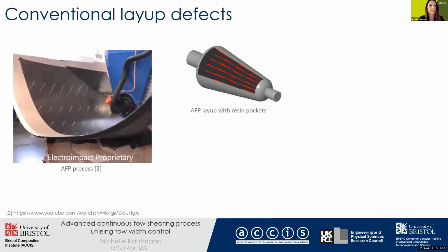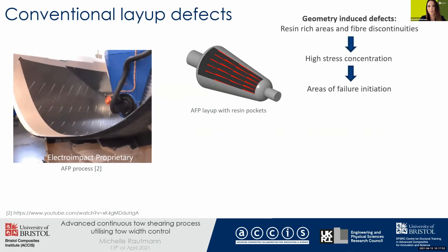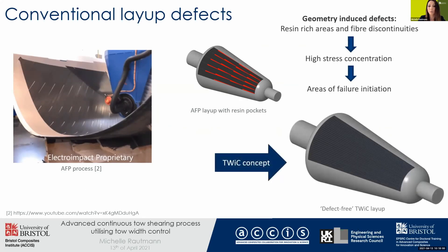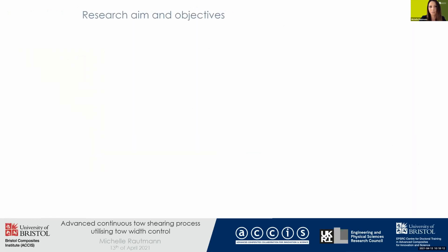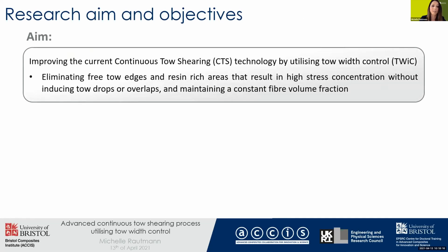Conventional layup defects induce triangular-shaped resin pockets, and the AFP process requires fiber cutting to achieve the desired shape. To address this, we developed a tow width control concept that allows controlling the tow width during layup, which would significantly improve mechanical properties. My research aim is to improve the current CTS technology by implementing a tow width control mechanism that allows us to control the tow width without cutting any fibers, thereby eliminating free tow edges, tow drops, and tow overlaps, while maintaining a constant fiber volume fraction throughout the process.